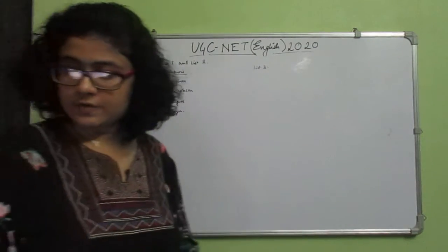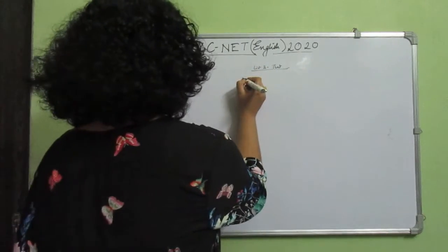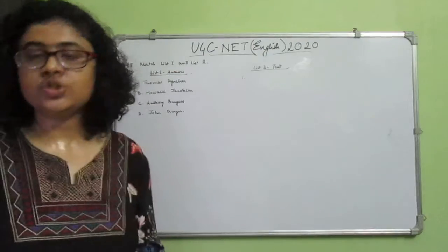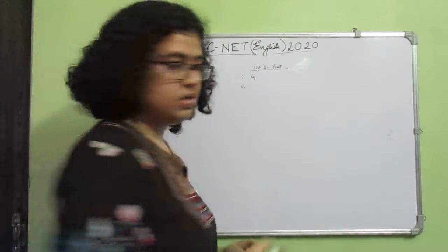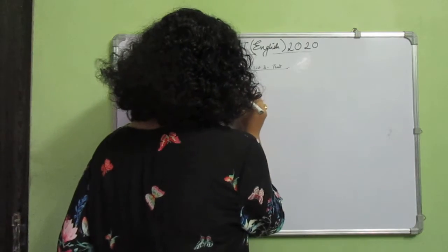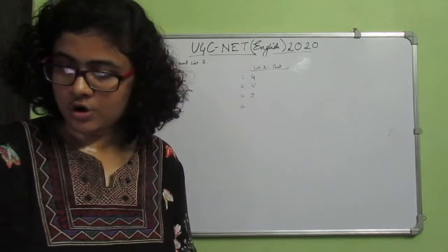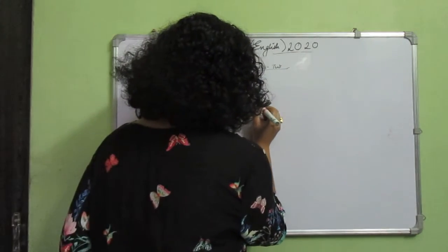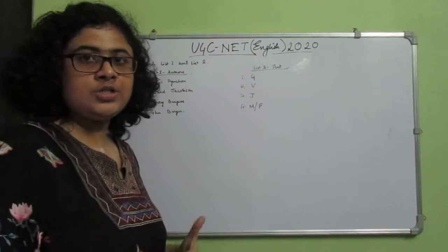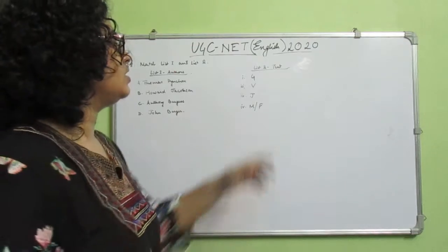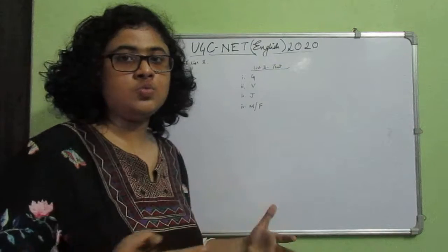List 2 contains the names of their novels: 1. G, 2. V, 3. J, 4. M/F. A little strange titles, but these are pretty famous texts. All the texts are named with just one or two alphabets.